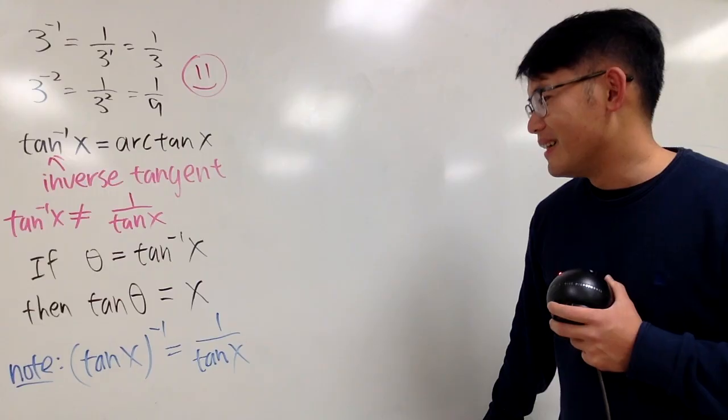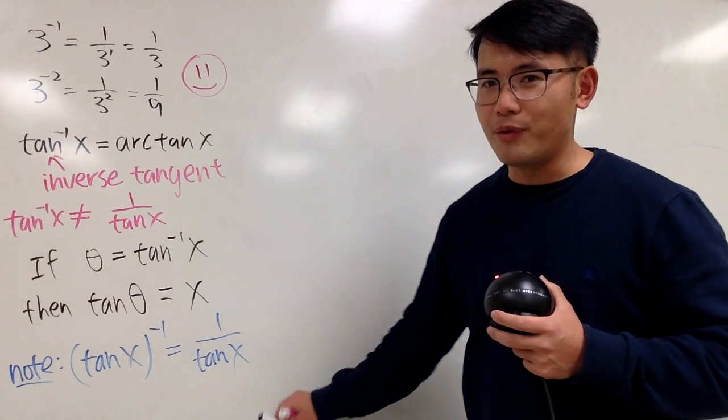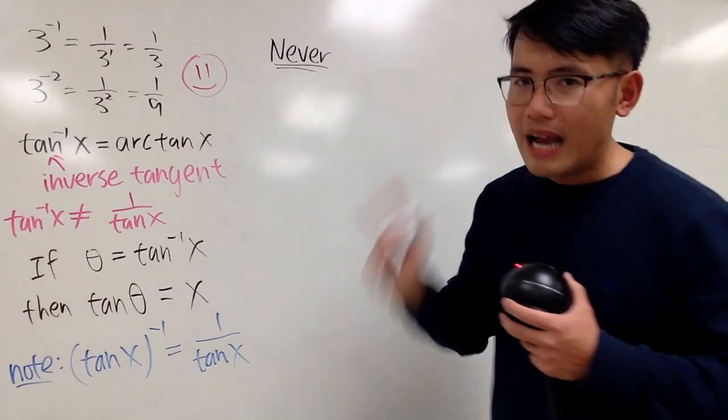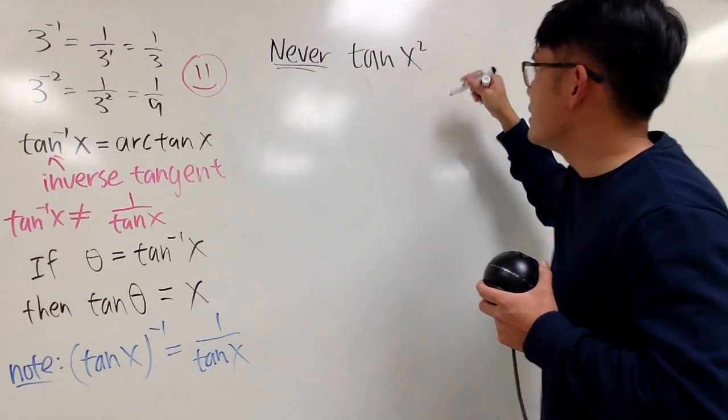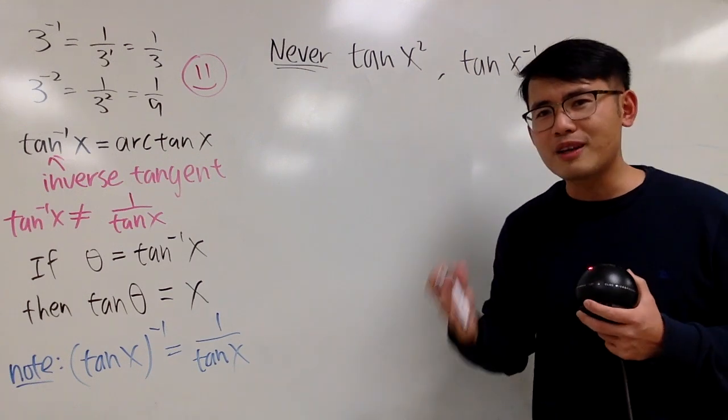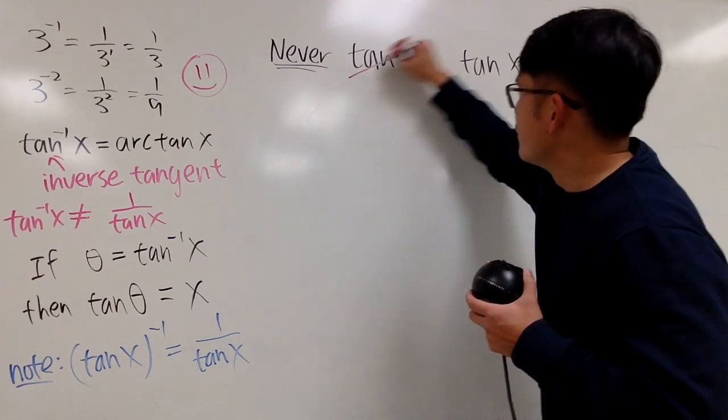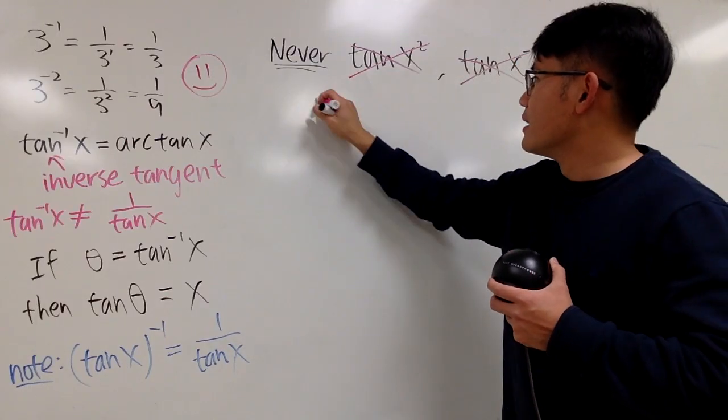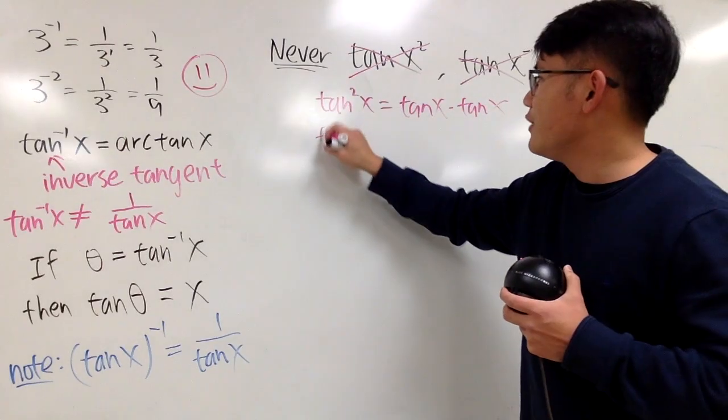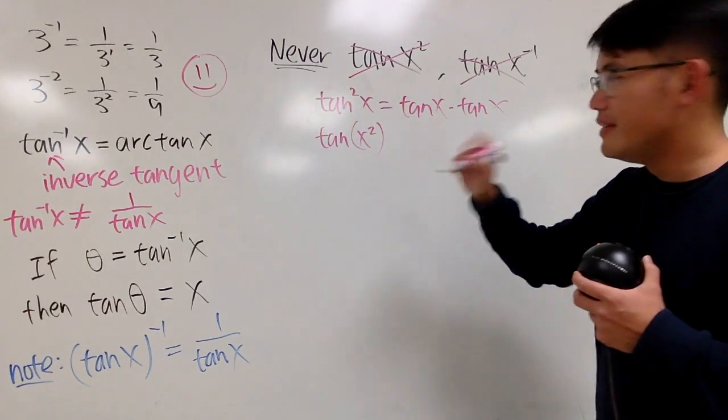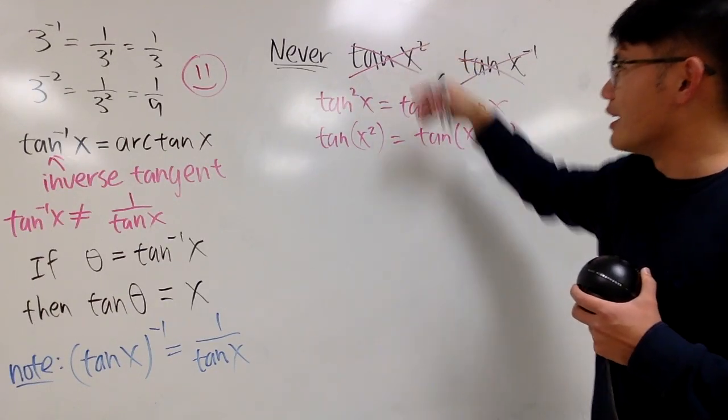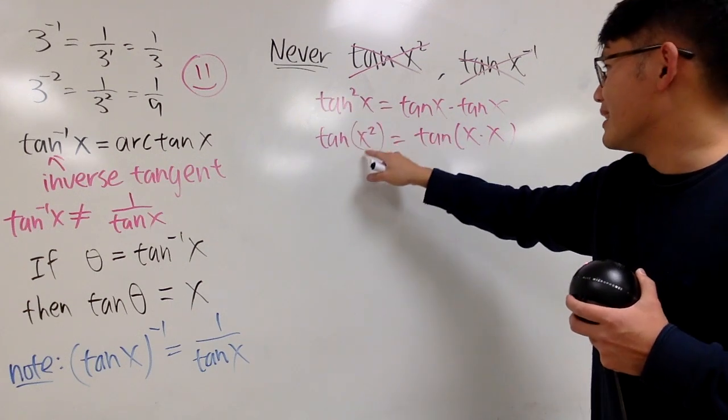But I will just tell you guys one little thing before we continue. I used to tell my students never, never ever write tangent with x squared like this, or tangent x negative 1 like this, without using parentheses. These two notations will really cause serious confusions. Never, never. If you want to say tangent squared x, this means tangent x times tangent x, that's okay. And if you have tangent of x squared, you should have a parenthesis like this, this means tangent of x times x, then that's okay. So seriously, don't ever write this down without the parentheses. This is okay. Never this.